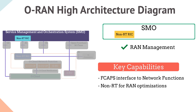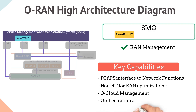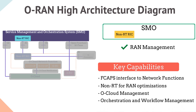can be onboarded to the common non-RT RIC platform. The next key capability is O-Cloud management, which includes installation of software, resource management and day-2 operations of the cloud. Next is orchestration and workflow management of the network functions. These cover the key capabilities of the SMO.